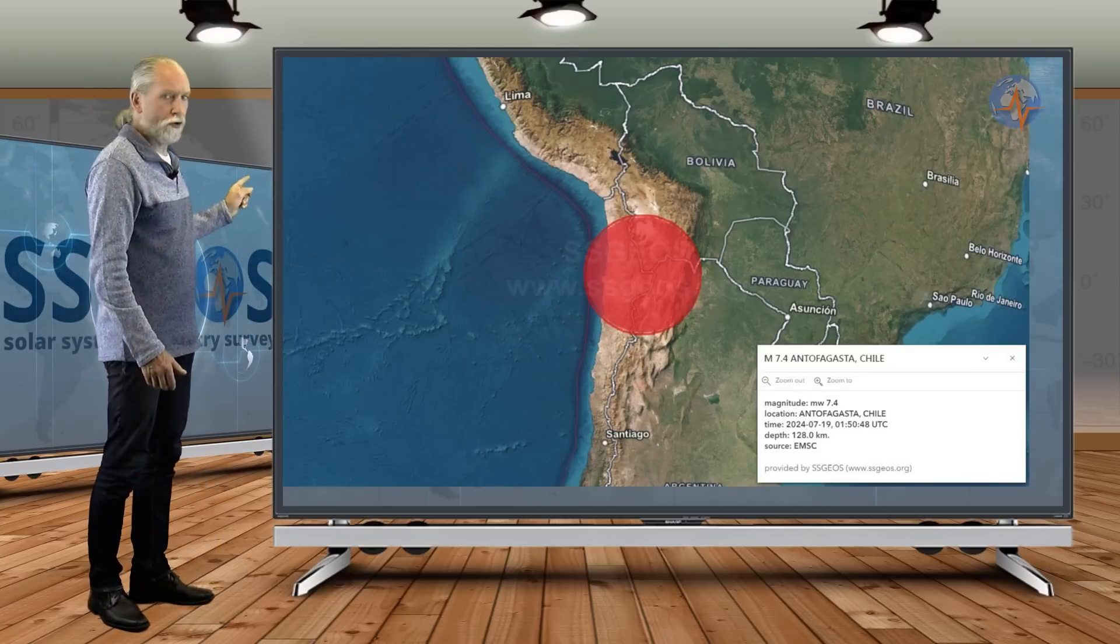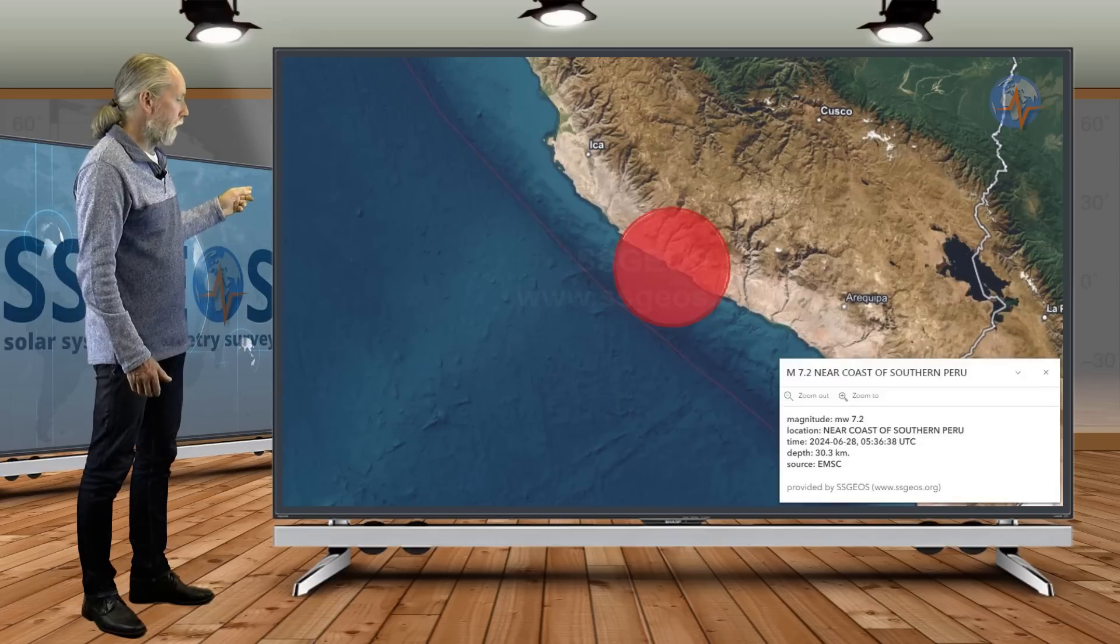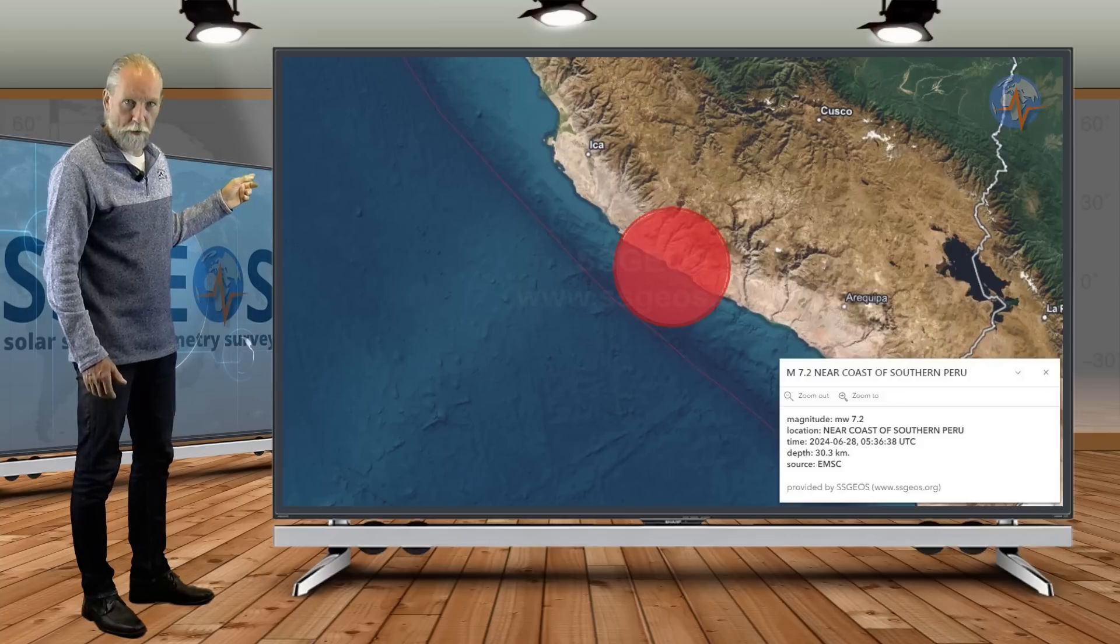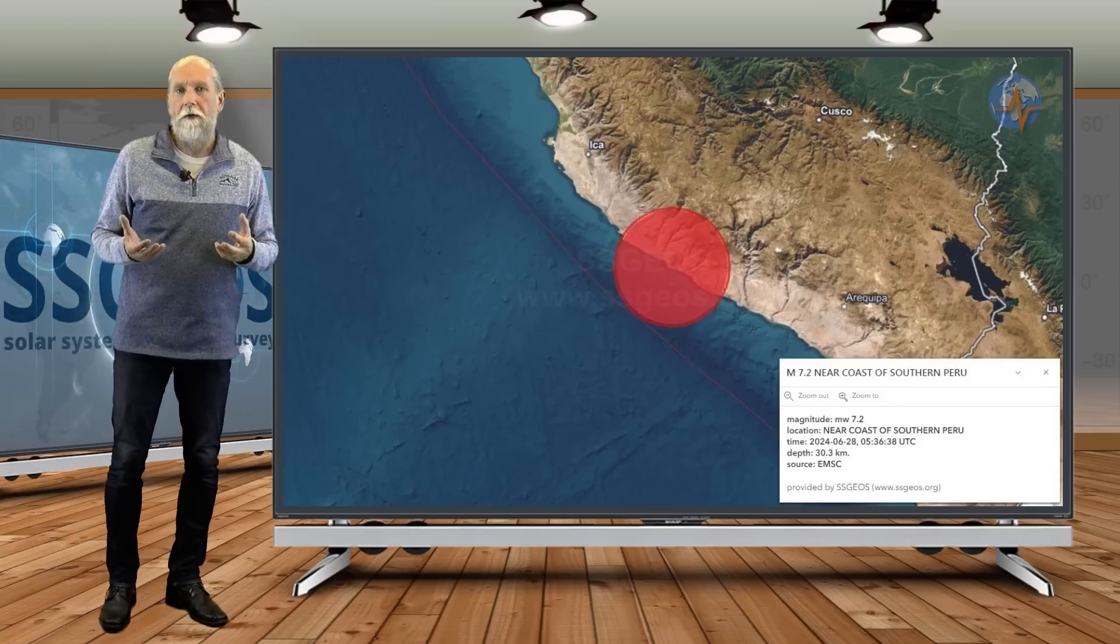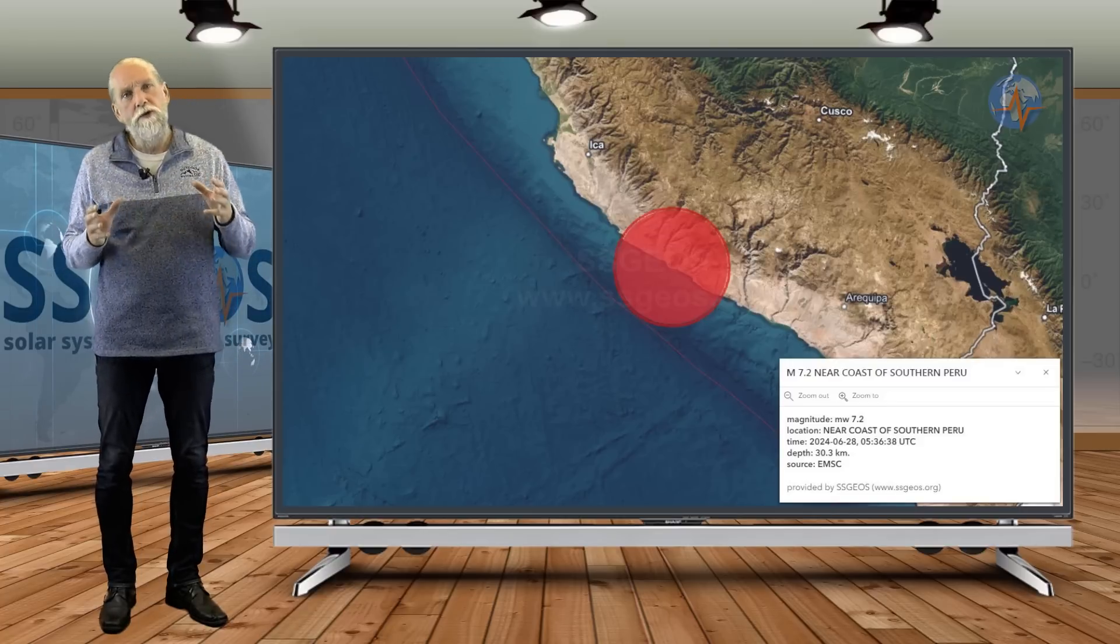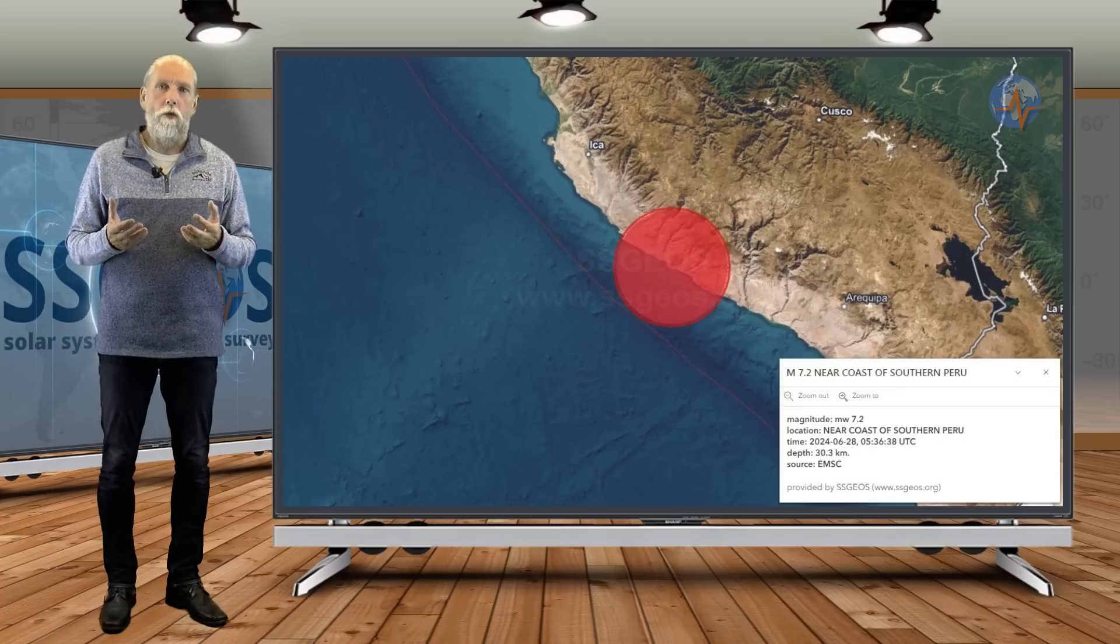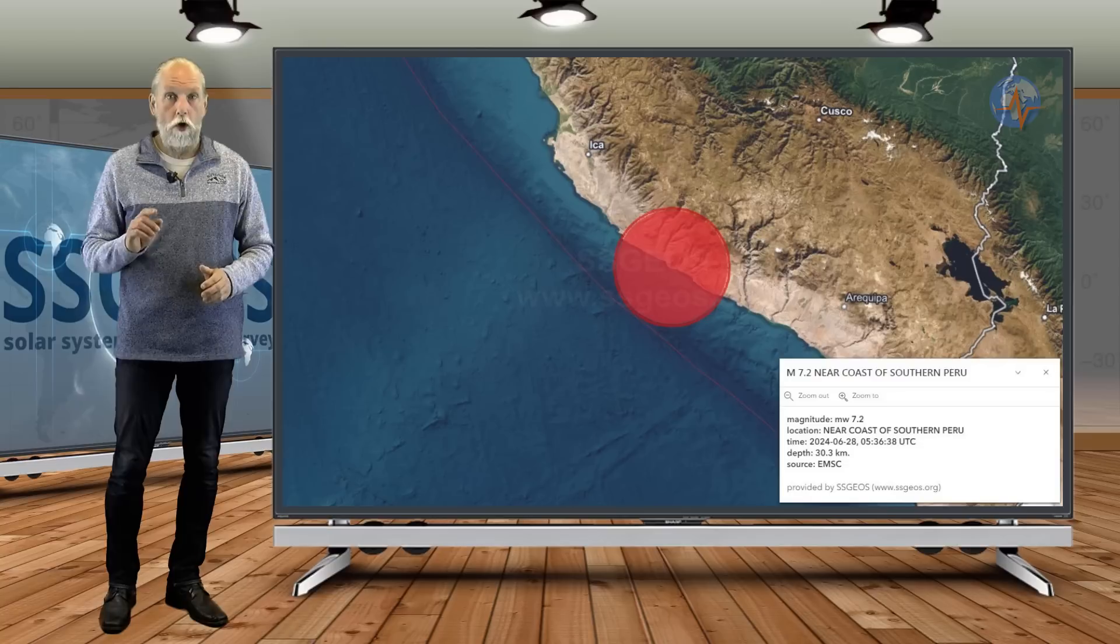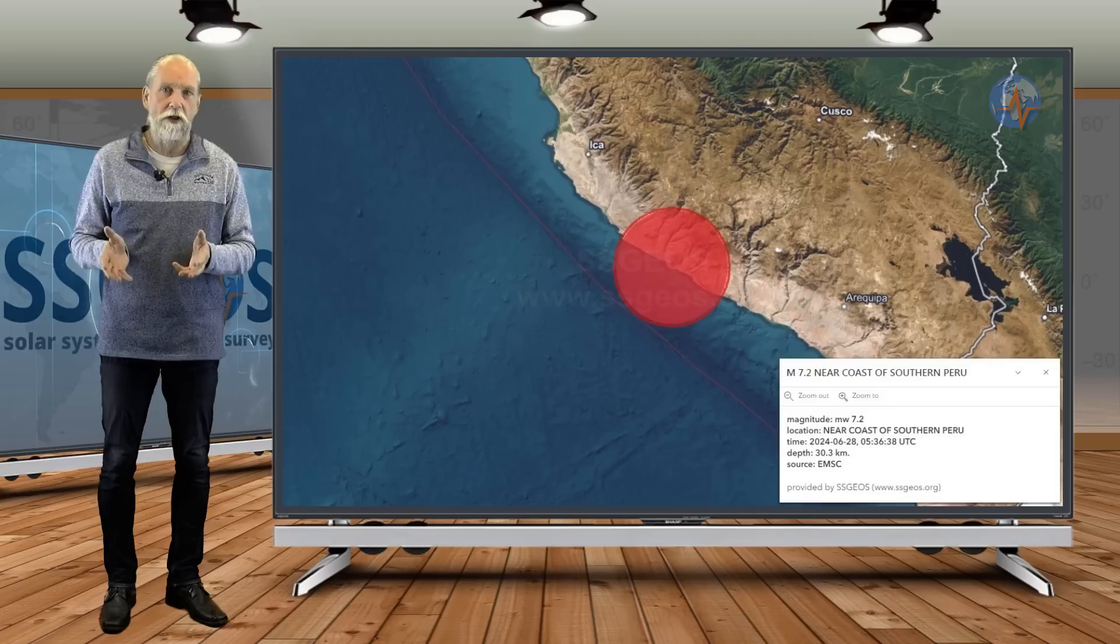This major earthquake in Chile, Antofagasta, Chile, it followed on the 7.2 that occurred near the coast of southern Peru in June. You may remember that major earthquake. I did an analysis of that earthquake, and I said that the stress distribution changed because of that major earthquake, and also that there has not been a major earthquake in Chile for a long time. I think the end of 2016 was the last time that we had a magnitude 7 or larger earthquake in Chile.